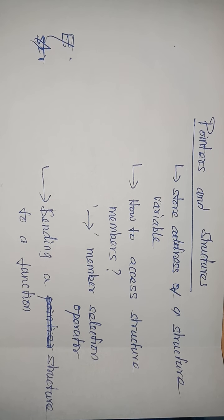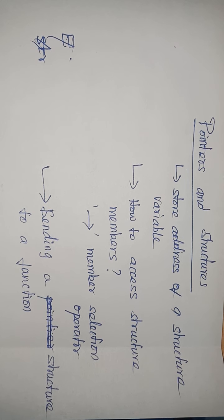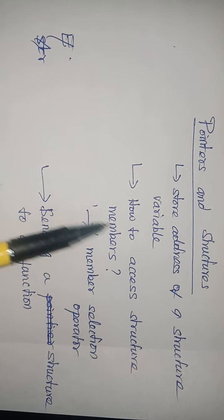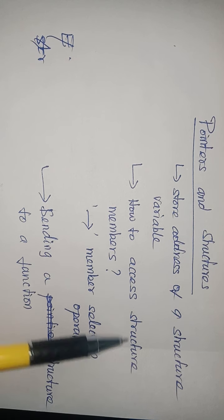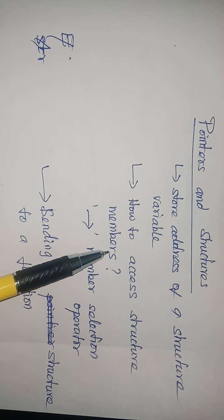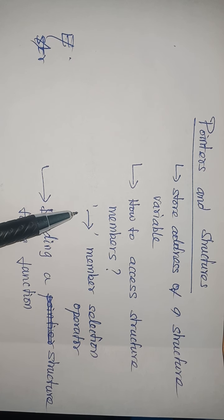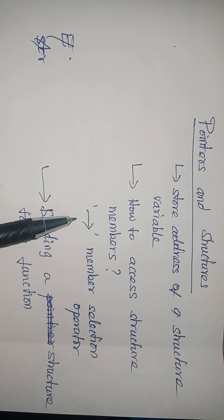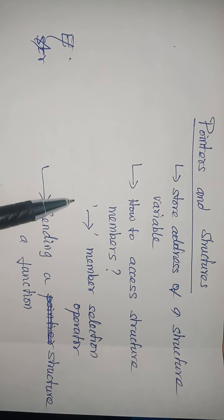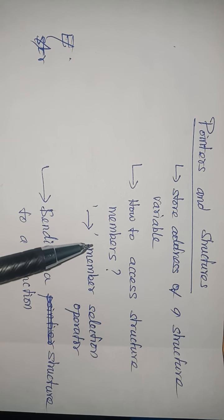Welcome to the last part of pointers - pointers and structures. We are going to store the address of a structure in a pointer variable and learn how to access the structure members using the pointer variable. Particularly, the arrow operator, otherwise called the member selection operator, will be used to access the structure members.